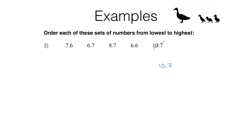We can't tell just by looking at the units column which is bigger, 6.6 or 6.7 — we have to look at the next place value column along, which is the tenths column. We see that the 6 I've underlined is smaller than the 7, so 6.6 is the smallest one and then it's followed by 6.7. Now we've got 7.6 and 8.7 left, and looking at the biggest place value column we can see that 7 is smaller than 8, so we don't even need to worry about comparing the tenths place value column.